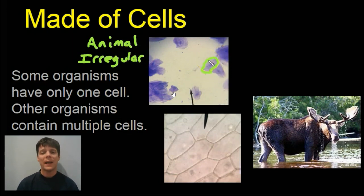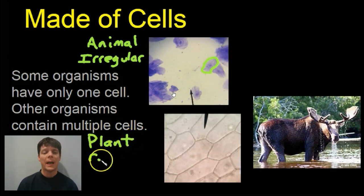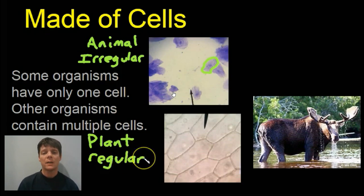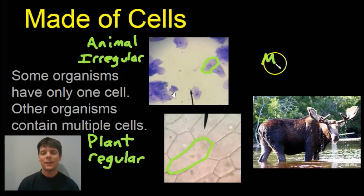We can see that they have an irregular shape because they do not have a cell wall. Now the next cells we're going to take a look at are plant cells. These are cells taken from an onion. We can see that the plant cells have a cell wall and they have a much more regular shape.